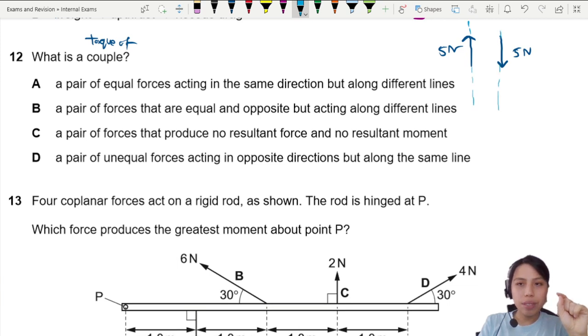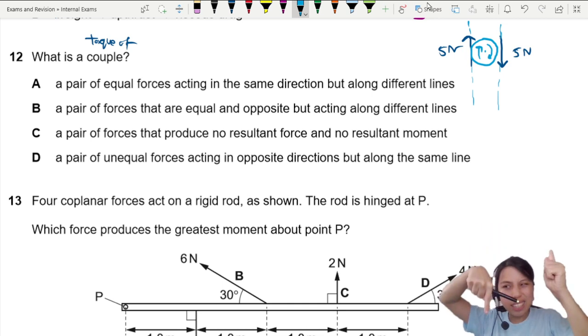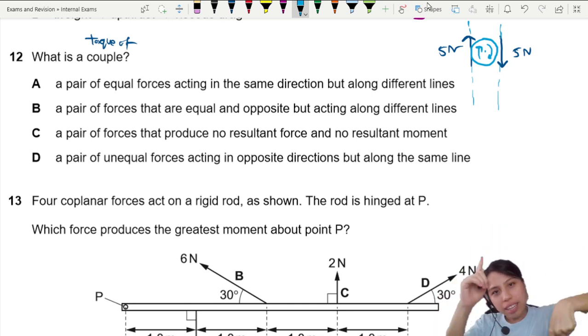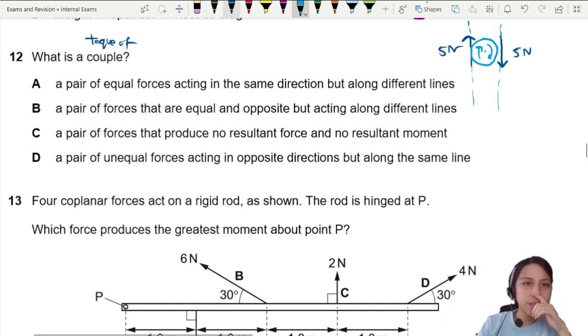They have to act on different locations. So if you are spinning a round thing here then this object will start to spin thanks to these two forces. It's like that or the other way, like that you rotate an object. That's the torque of a couple.